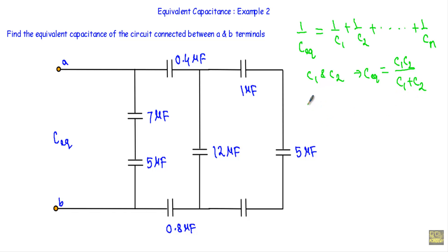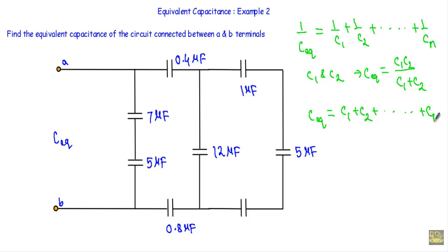When we have n capacitors connected in parallel, we calculate the equivalent capacitance as C_equivalent = C1 + C2 + ... + Cn. We simply take the sum of all the capacitances to get the equivalent capacitance for a parallel connection.